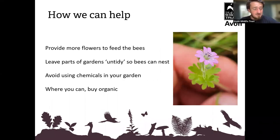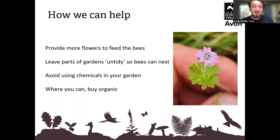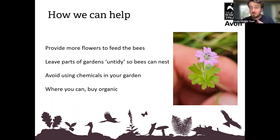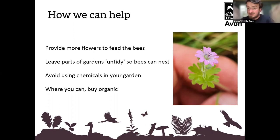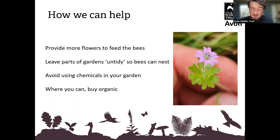So how can we help? First and foremost, the obvious one: provide more flowers to feed the bees. Leave parts of your garden untidy — leave parts of any land you own untidy. It doesn't all need to be mowed within an inch of its life. Avoid using chemicals — we've explained why. And where you can, buy organic. That covers the same thing.